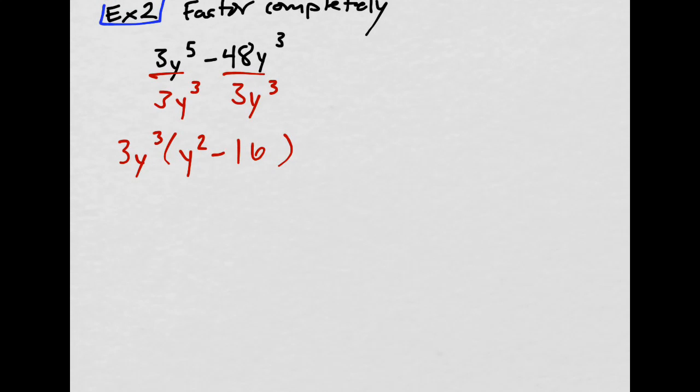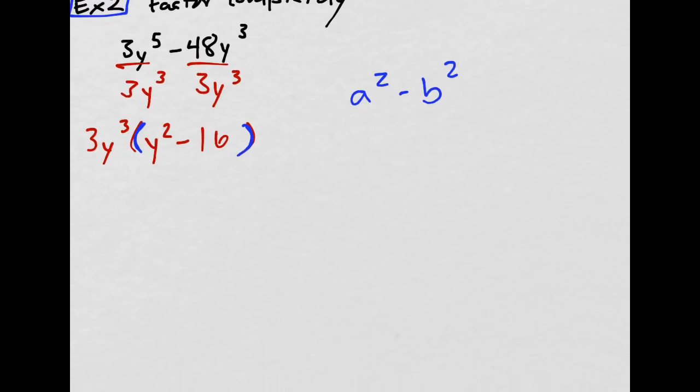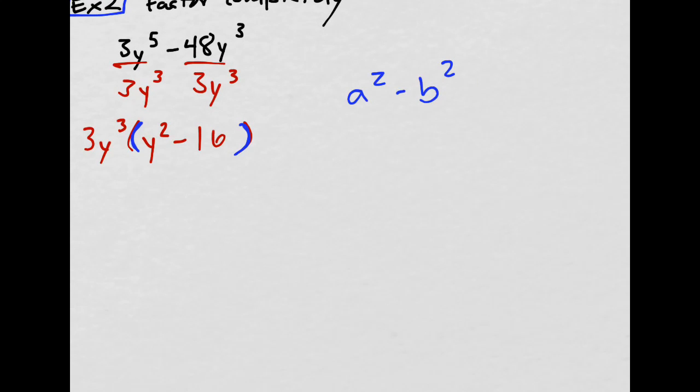So what happens when I can do a difference of squares? I'm going to put this in blue. So difference of squares. I know that there's a difference of squares pattern: a squared minus b squared. That's a difference of squares.